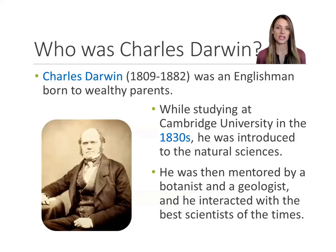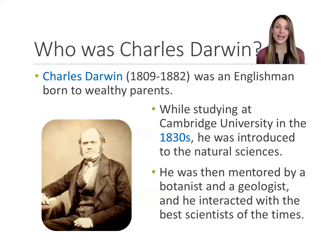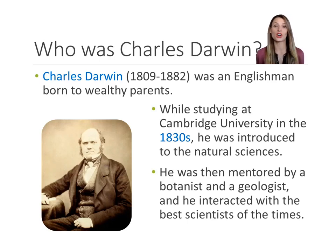Darwin was born in England to wealthy parents. His mother was an heir to a business that made pottery and china. As an adolescent, he was described as smart, but also spoiled and aimless. At the time, his parents were afraid that he would never accomplish anything, that he would grow up living in their house for the rest of his life.